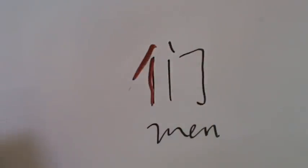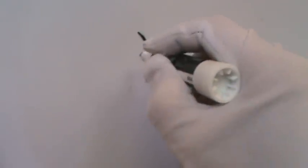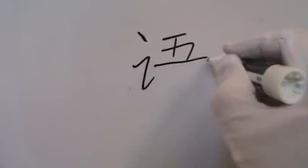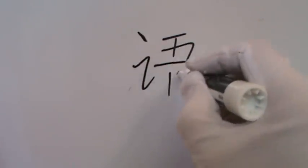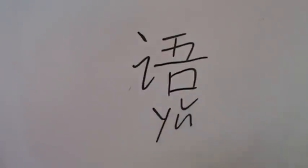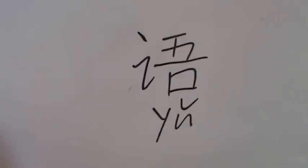Now, number 30: 语 (Yu), written with 9 strokes. Yu means language. And the radical is this one.